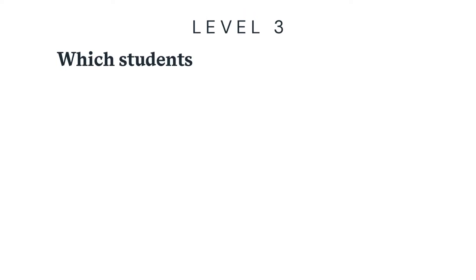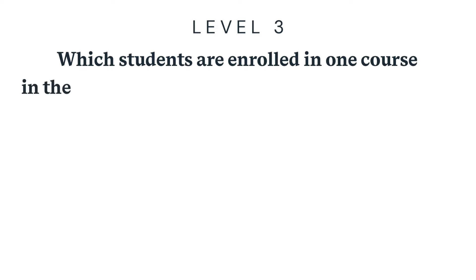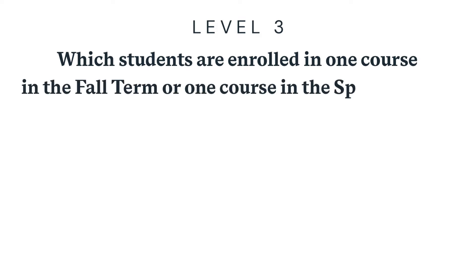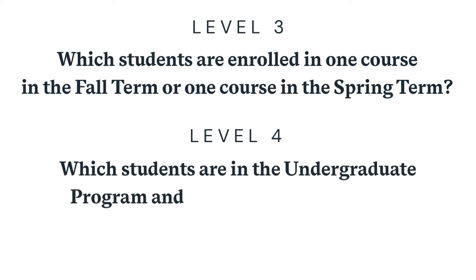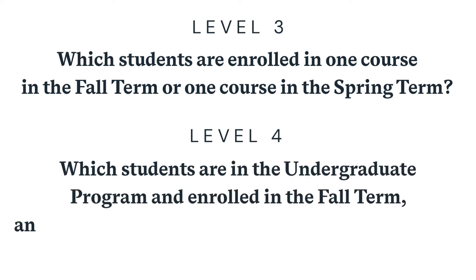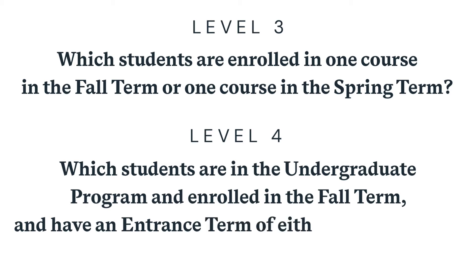Those questions are: which students are enrolled in one course in the fall term or one course in the spring term? And which students are in the undergraduate program and enrolled in one course in the fall term and have an entrance term of either fall or spring?